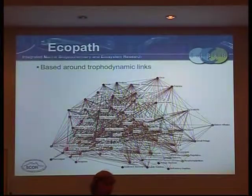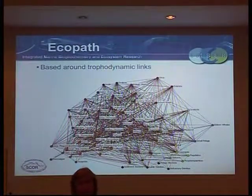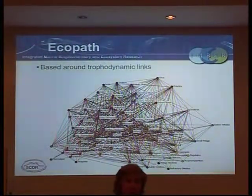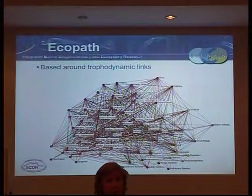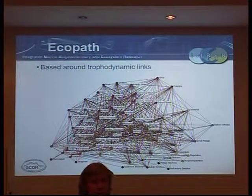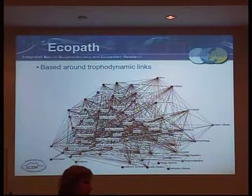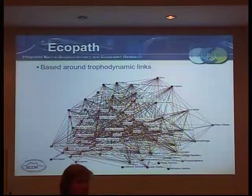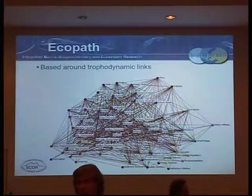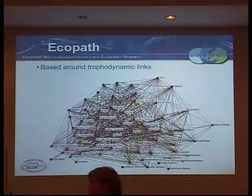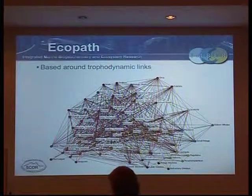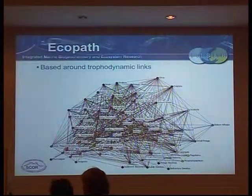It's all based around trophodynamic interaction. It's a food web in the sense that it's an aggregated one that you put into Ecopath - not the really species-by-species one that you'll see from people like Jason. But it does give you a bit of a sense of how complicated they can actually be.